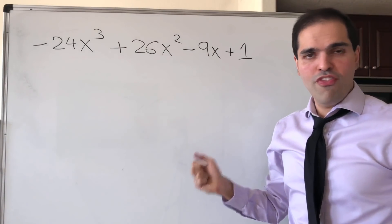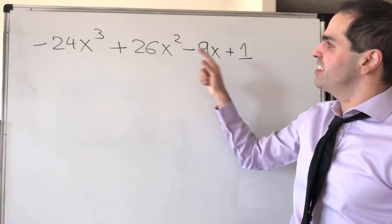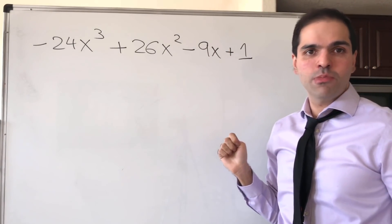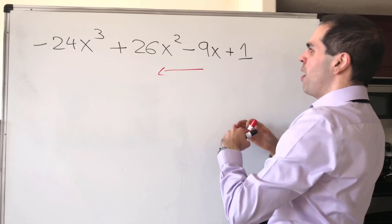Suppose your professor asks you to find the zeros of minus 24x cubed plus 26x squared minus 9x plus 1. You will be like, no problem. Consider the reverse polynomial.